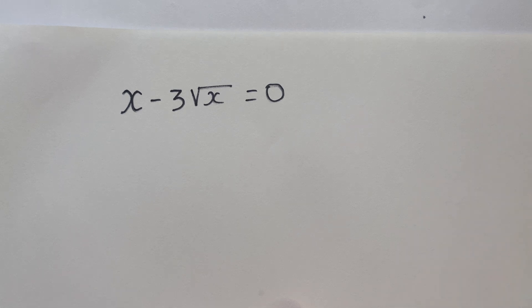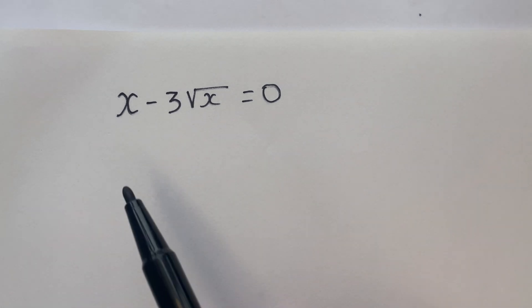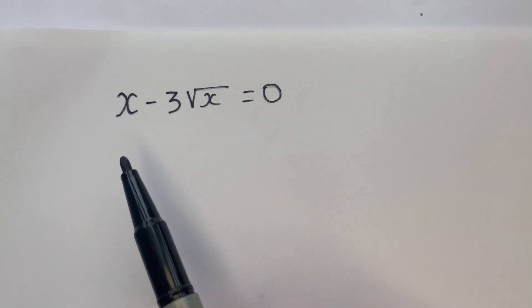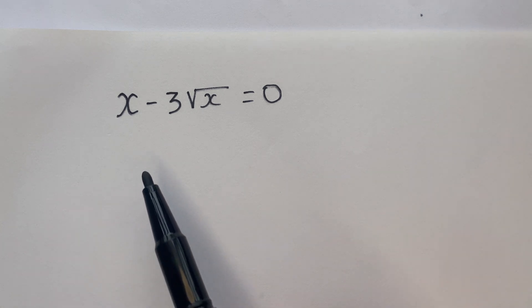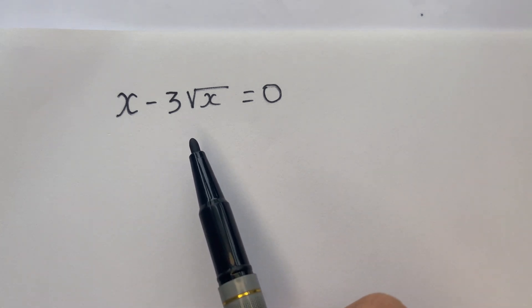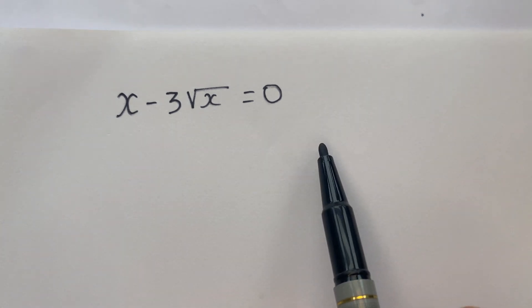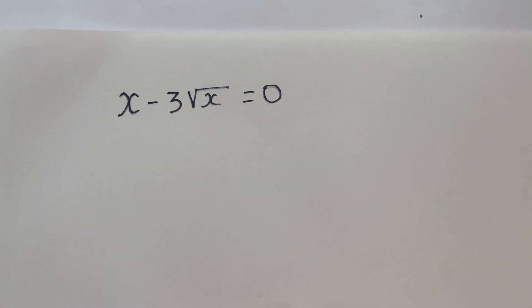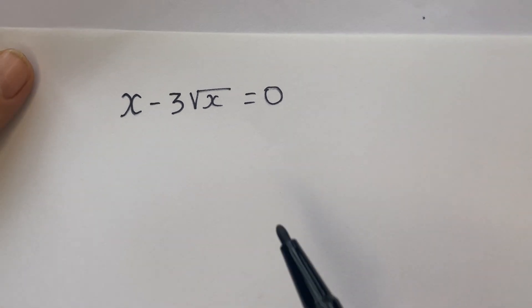Hello everyone! How to find the value of x in this equation? x minus 3 square root of x equals 0. Everyone see that?